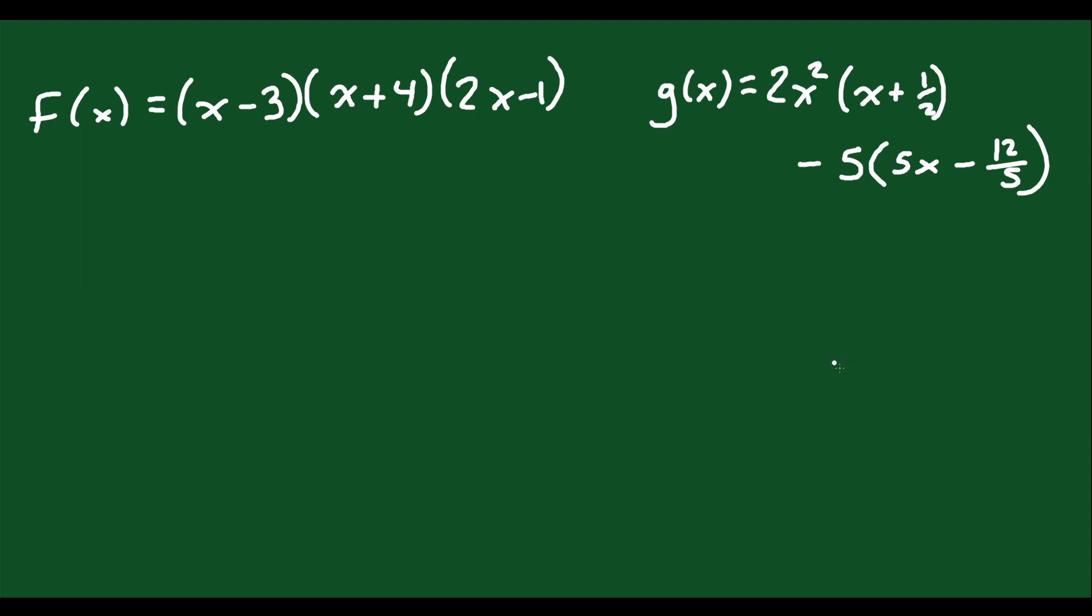And so to figure out if these two things are equivalent, we're going to do the same thing. We're going to simplify both of these. So to simplify this on the left, we can FOIL out the first two brackets and then multiply in the 2x minus 1 after that. So we'll leave that the same. x times x is x squared. x times 4 is 4x. Negative 3 times x is negative 3x. Put those together, you get plus x. Negative 3 times 4 is negative 12.